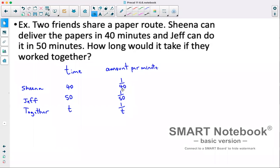Essentially, the amount per minute that Sheena can do and Jeff can do, if we add those together, that should give us the amount that they can do it together in. So I would have 1 over 40 plus 1 over 50 equals 1 over T. Now our common denominator for this would be 200T, so multiply everything by 200T.